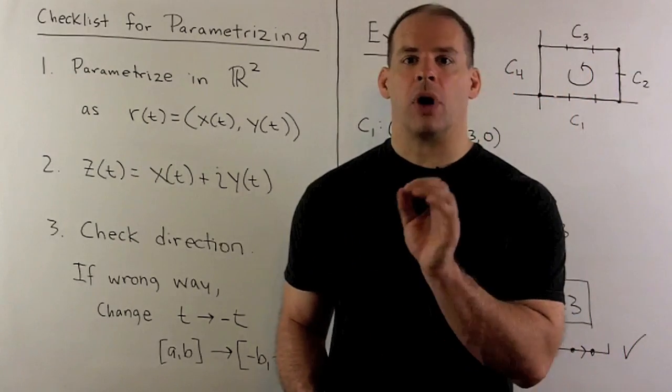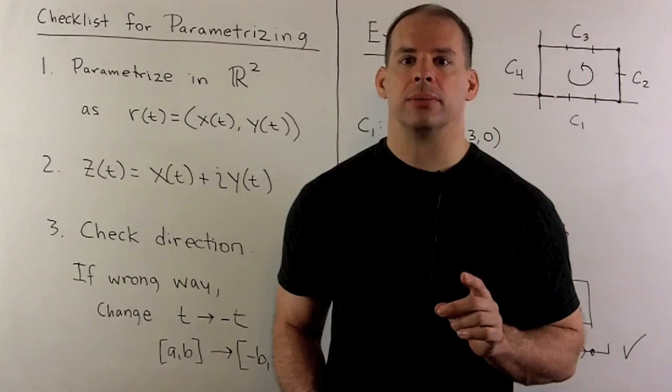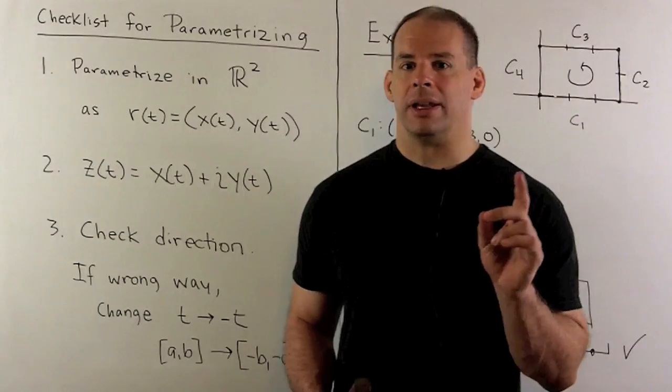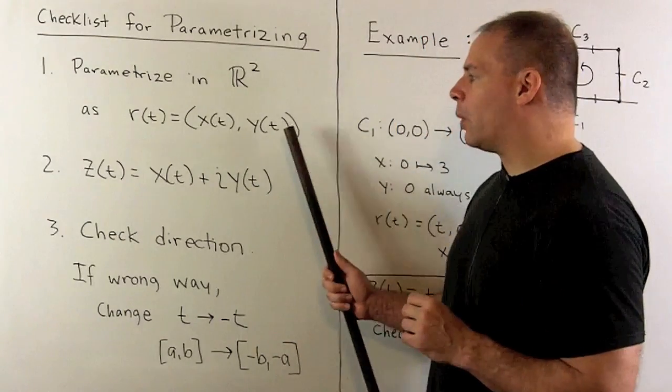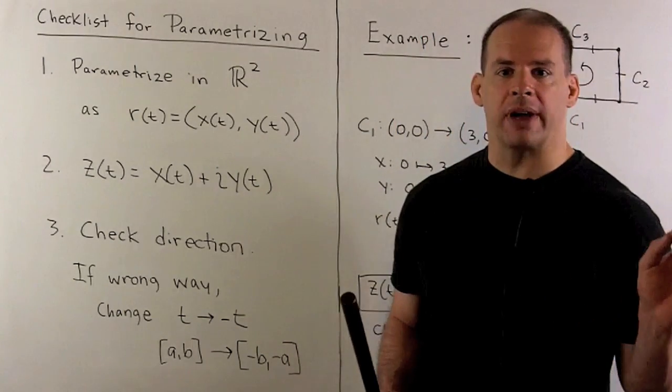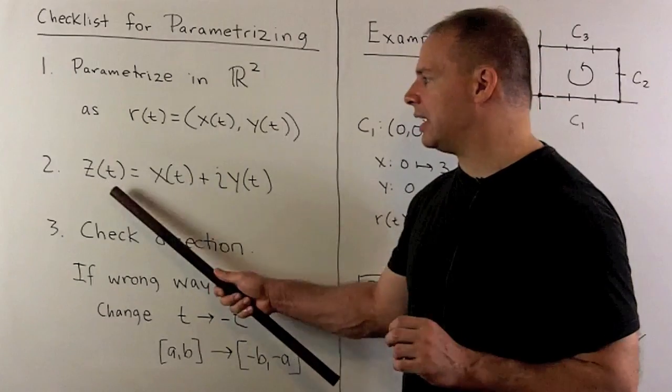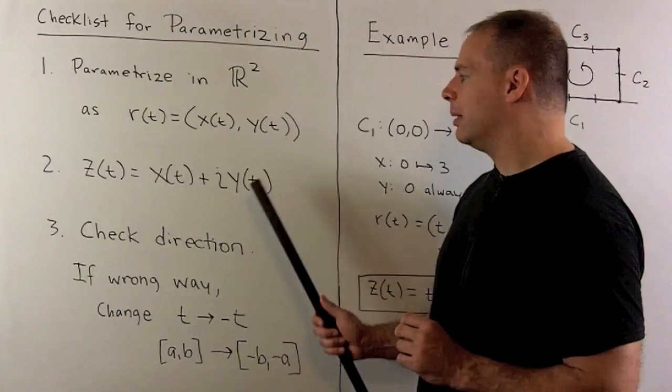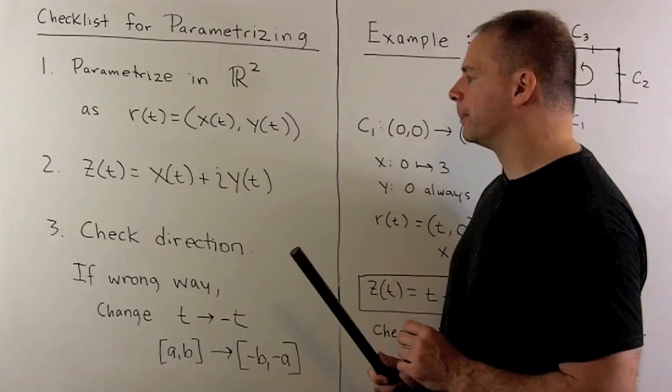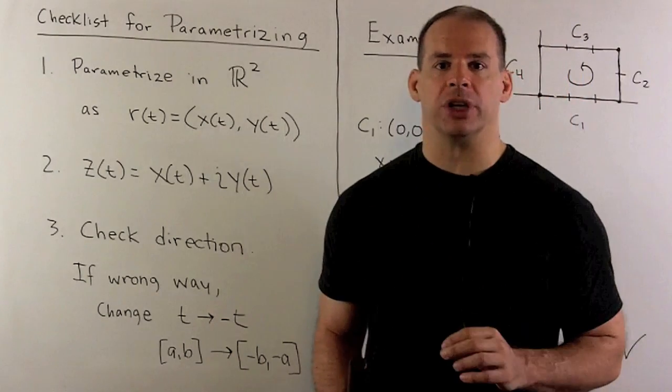Now here, we're going to run through the main examples. Once I have x of t and y of t, the recipe to go to the complex plane is just to let z of t be equal to x of t plus i y of t. That's going to be our parametrization.